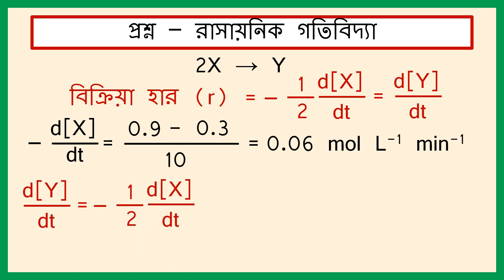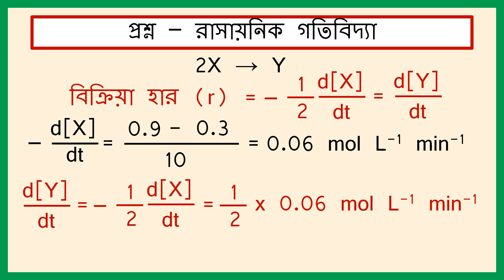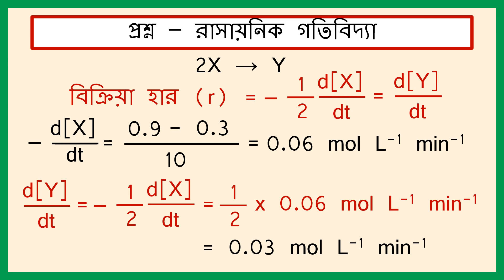Suman half into 19.6 mol liter inverse minute inverse. Y-tho minus d[X]/dt. Y-er man suman 90.6 mol liter inverse minute inverse. Vireo t dakhat yorno dh orno vat.